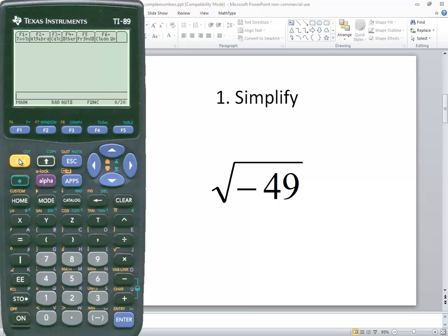Now if we put this in, we do second and then the multiplication to get to the square root. Puts the square root, puts the beginning parentheses, then we'll put in negative 49, closing parentheses, and now one of two things will happen if you press enter at this point.